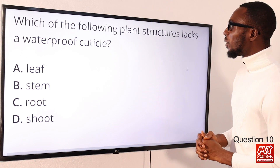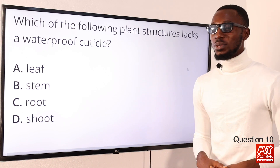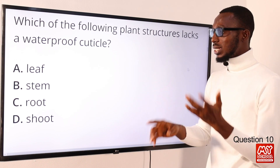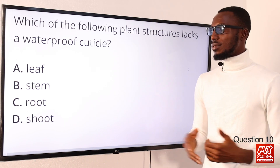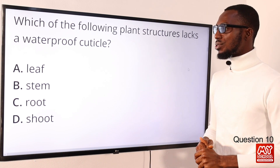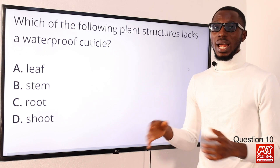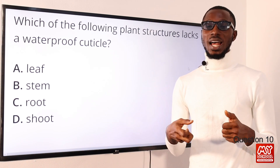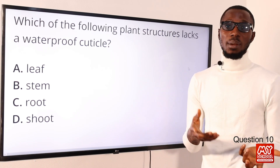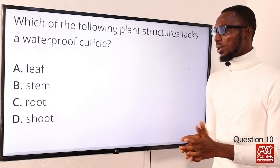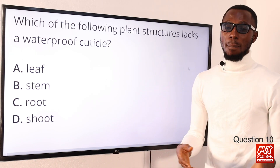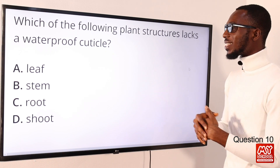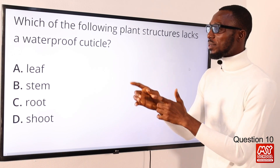Question 10: which of the following plant structures lacks a waterproof cuticle? The cuticle is a waxy layer or covering found on the leaf, the young stem, and on fruits — it prevents water loss. When you look at the roots of a plant, the root should not have this waterproof cuticle because roots absorb water by osmosis from the soil, with the cell membrane acting as a selectively permeable membrane, and roots also take up minerals by active transport. So the correct option is option C for roots.